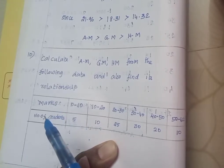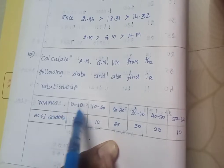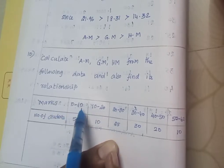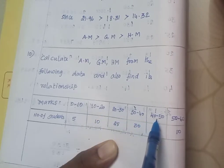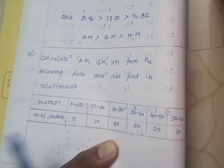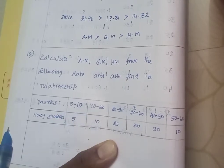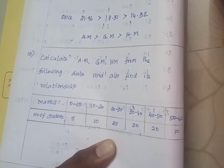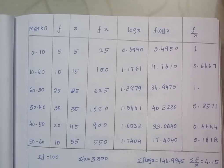They only gave the class interval. This is called continuous data. For discrete data, x values are given individually, but for continuous data they didn't give the x value. We want to find the x value.